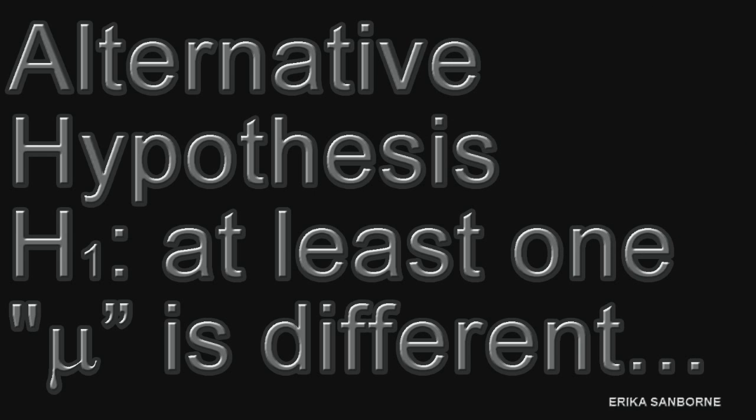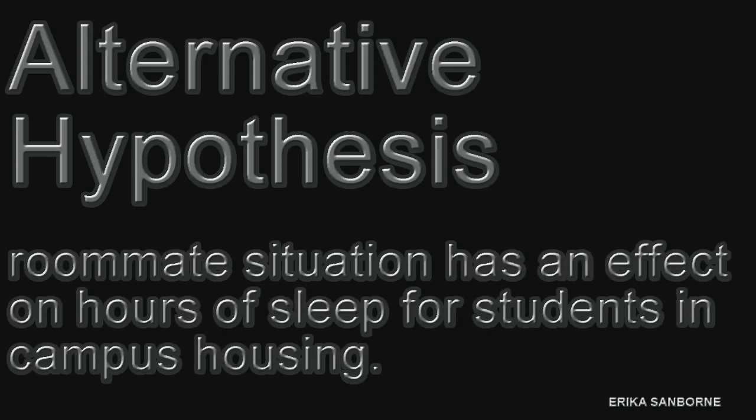The alternative hypothesis is boring and simply says that there is at least one mean difference among the populations. It's not required actually that all three be different, just that all three not be the same. If one is different, it's a significant test for the ANOVA. The alternative hypothesis in symbols is written usually like you see here, and in words, it would be that roommate situation has an effect on hours of sleep for students in campus housing.